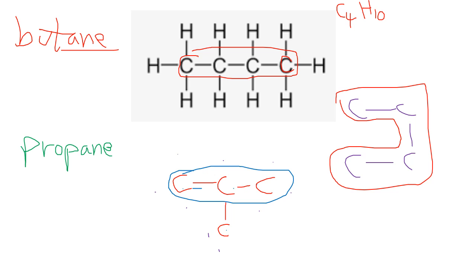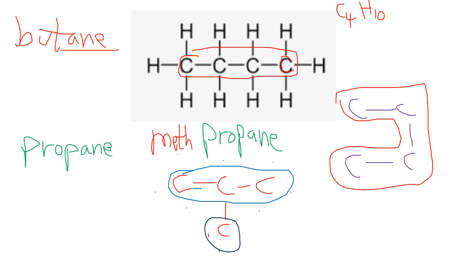But what about the carbon coming off the main chain? We call this a side chain. There's one carbon in the group, and the word for one is 'meth'. Because it's coming off the main chain, we add the letters Y and L — making it 'methyl'. So the name becomes methylpropane.